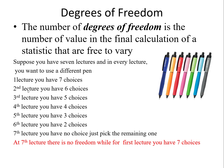When you use one pen for the first lecture, for the second lecture you have six choices remaining. Similarly, for the third lecture you have five choices, for the fourth you have four, for the fifth you have three, for the sixth you have two. But when the sixth lecture is finished, for the seventh lecture you have no other choice — you will only pick the one remaining pen.